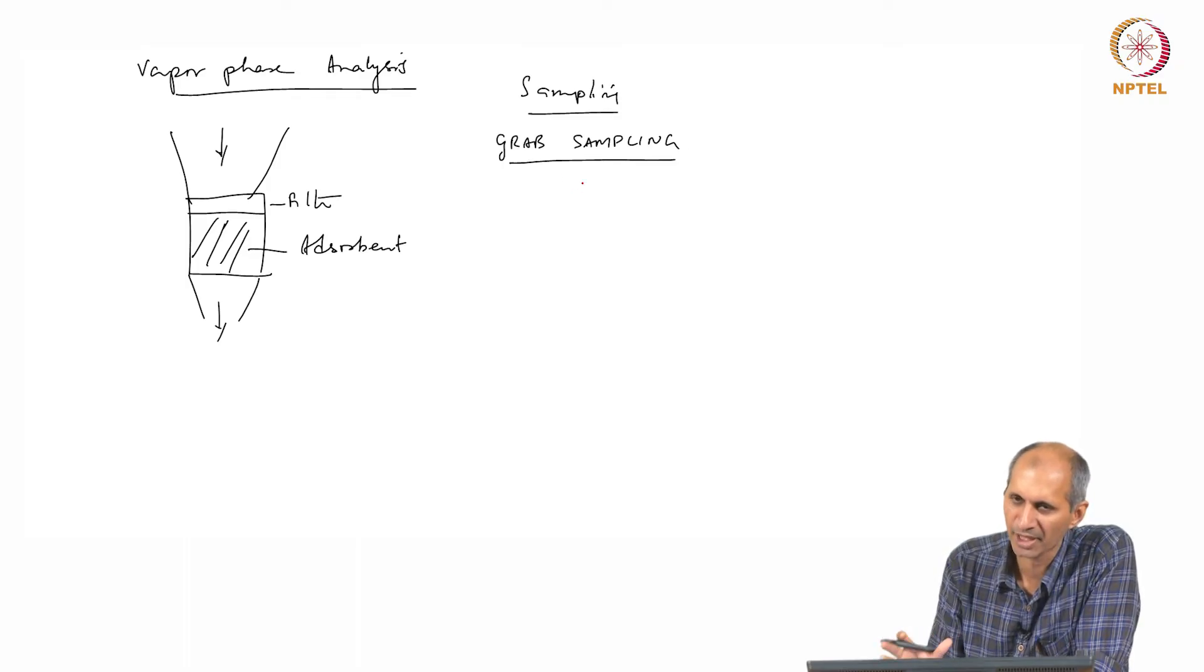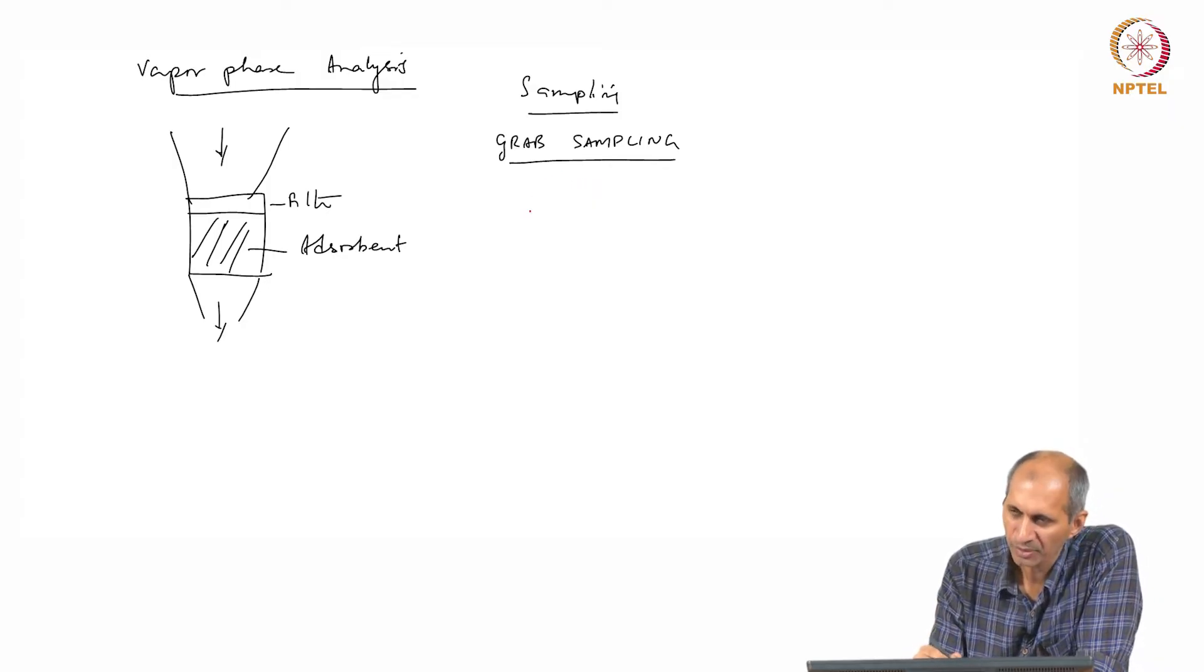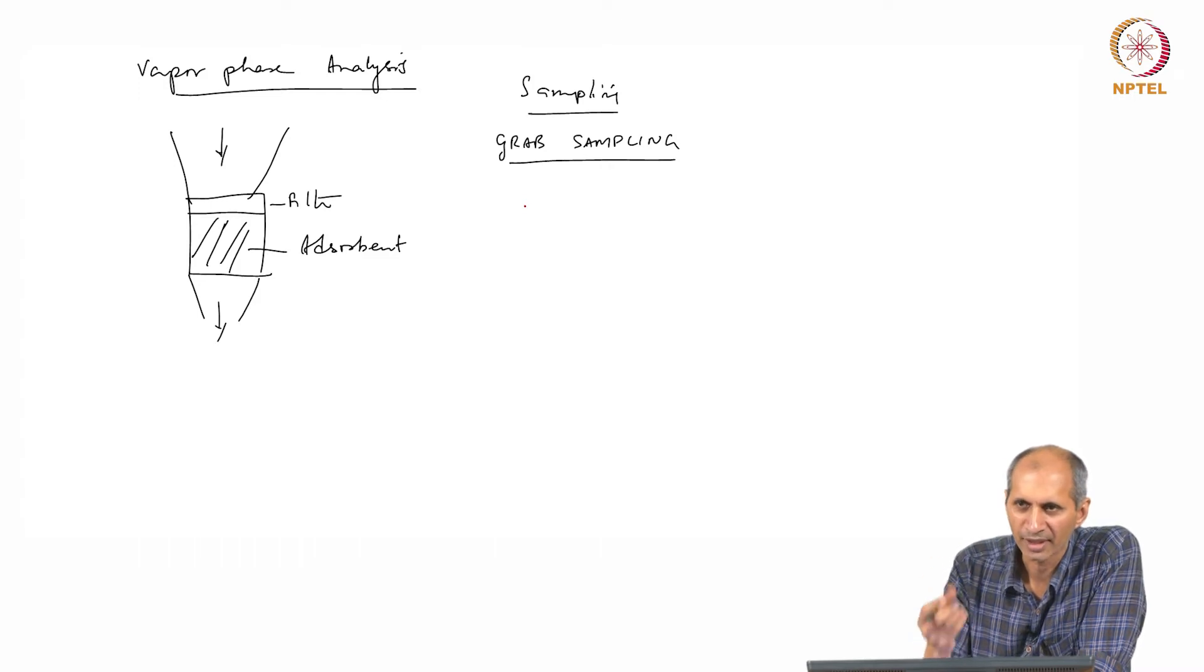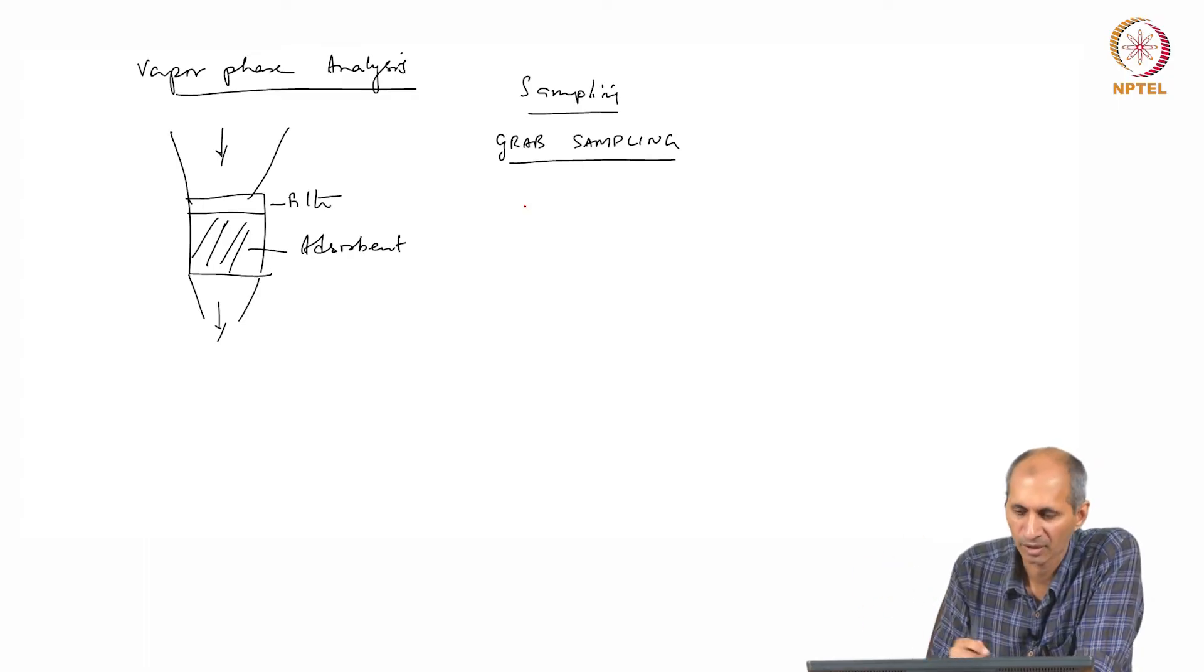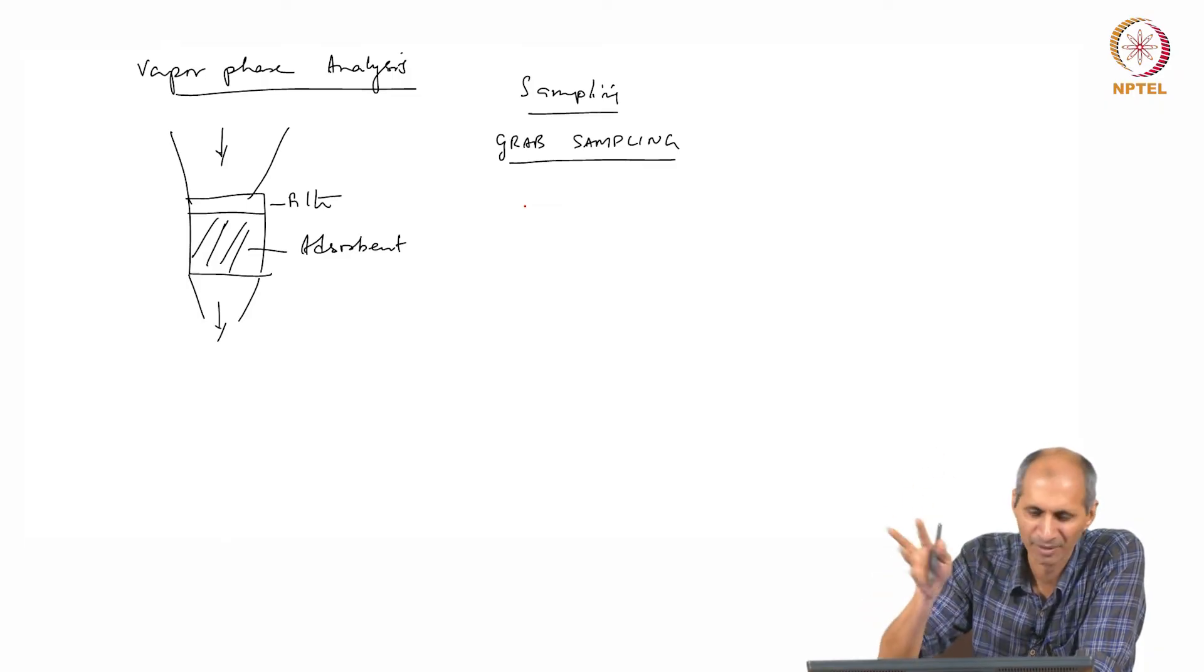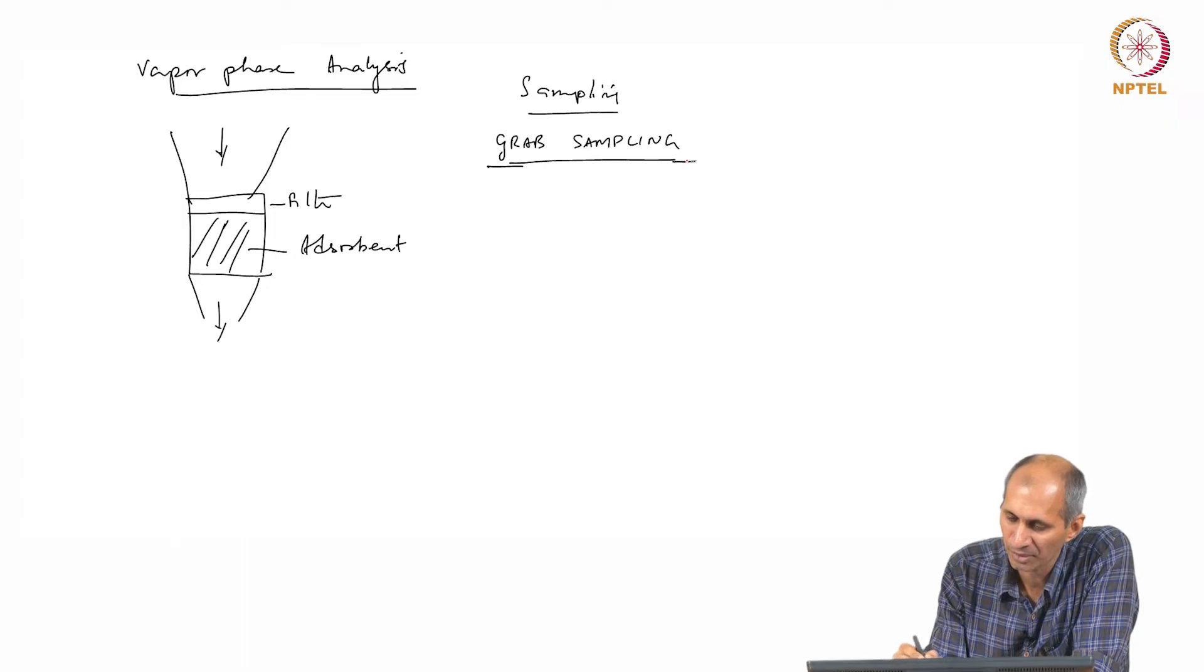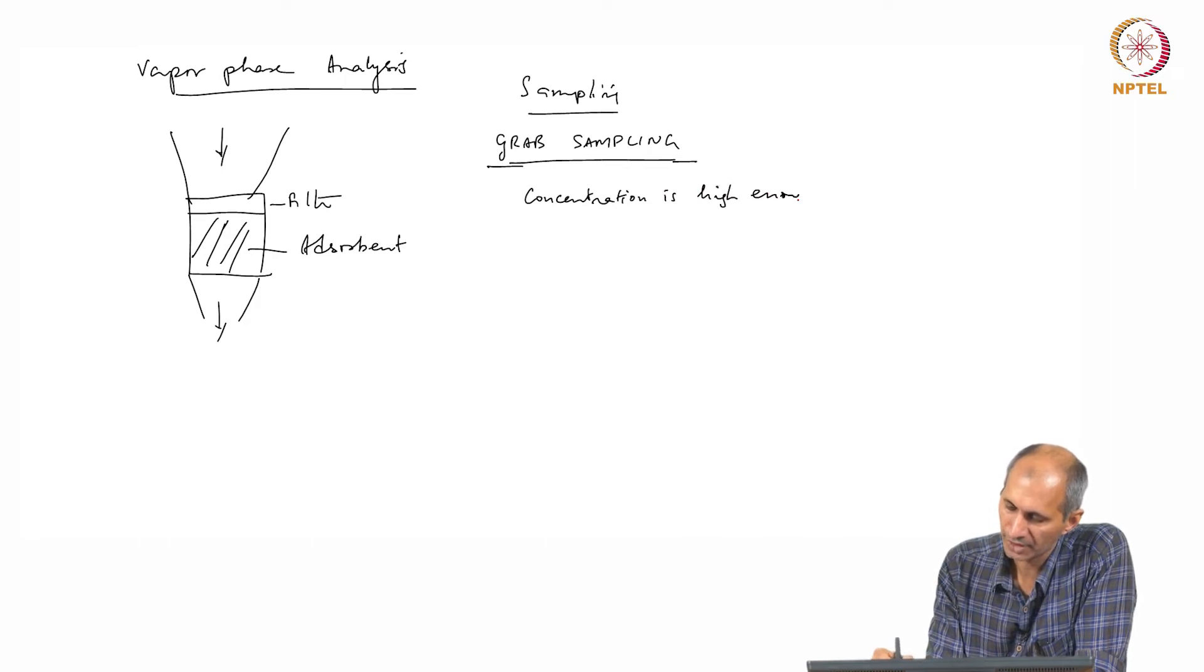Grab sampling essentially means I take some volume of sample and I analyze it as it is. If I'm doing grab sampling, I have to define a volume, there's a certain volume, I take gas or vapor in that volume and I directly go and inject it into a GC or HPLC or something and get some signal. A grab sampler is done when concentration is high enough for direct analysis, no processing required.